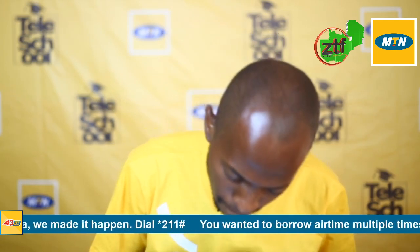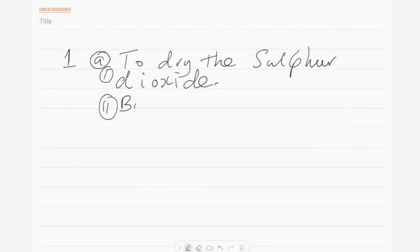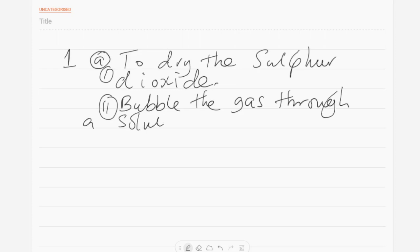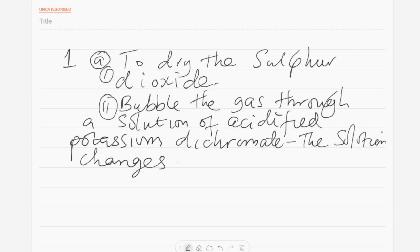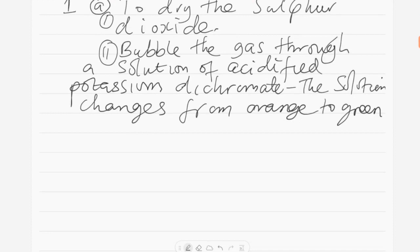For A2: bubble the gas through a solution of acidified potassium dichromate. When you do this, the solution changes from orange to green. That is how we can identify if the sulfur dioxide gas has been produced.